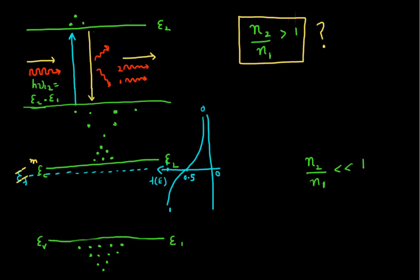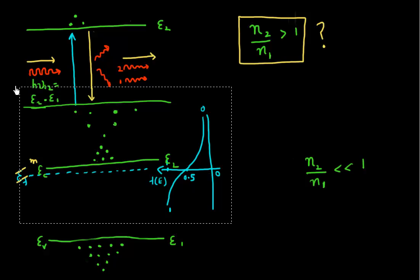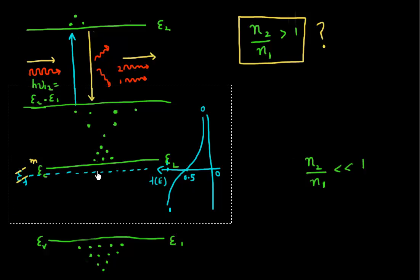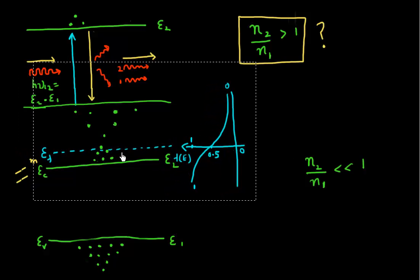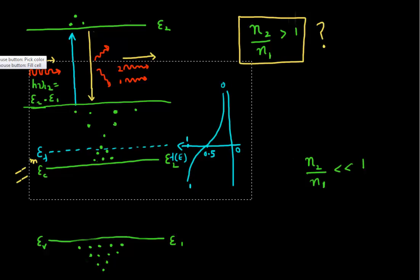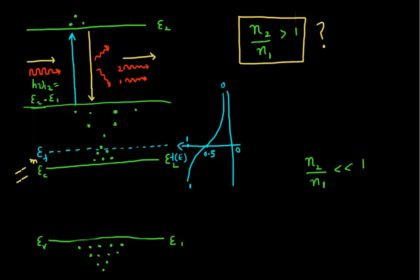You could also consider the case where you use degenerate doping and move the Fermi level deep into the conduction band. Again, this increases the number of electrons in the conduction band pile. But there is still a far larger probability of occupation in the valence band states — those states are all occupied with electrons. So N2/N1 will again still remain less than 1. We don't seem to be approaching the case of population inversion — where the number of electrons in the higher energy state is greater than in the lower energy state — especially when we are in equilibrium.